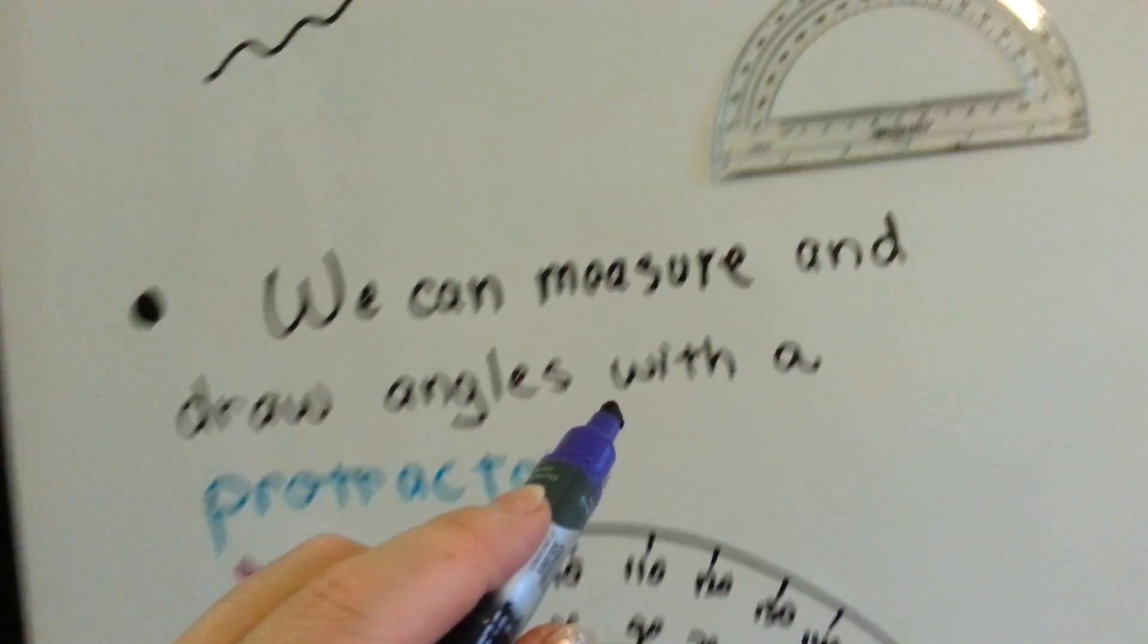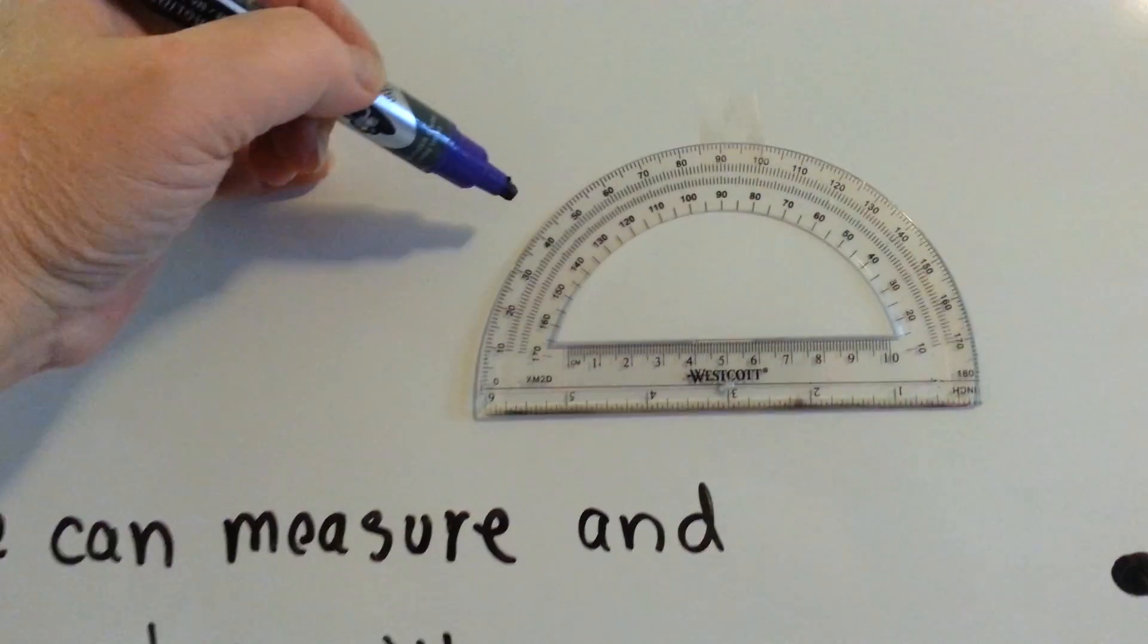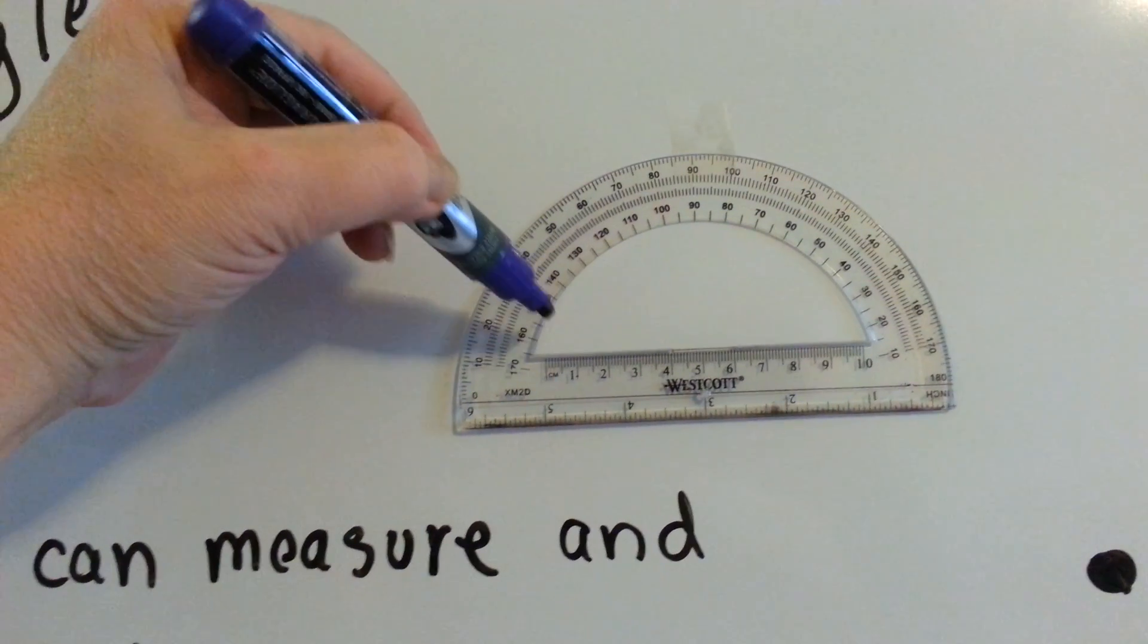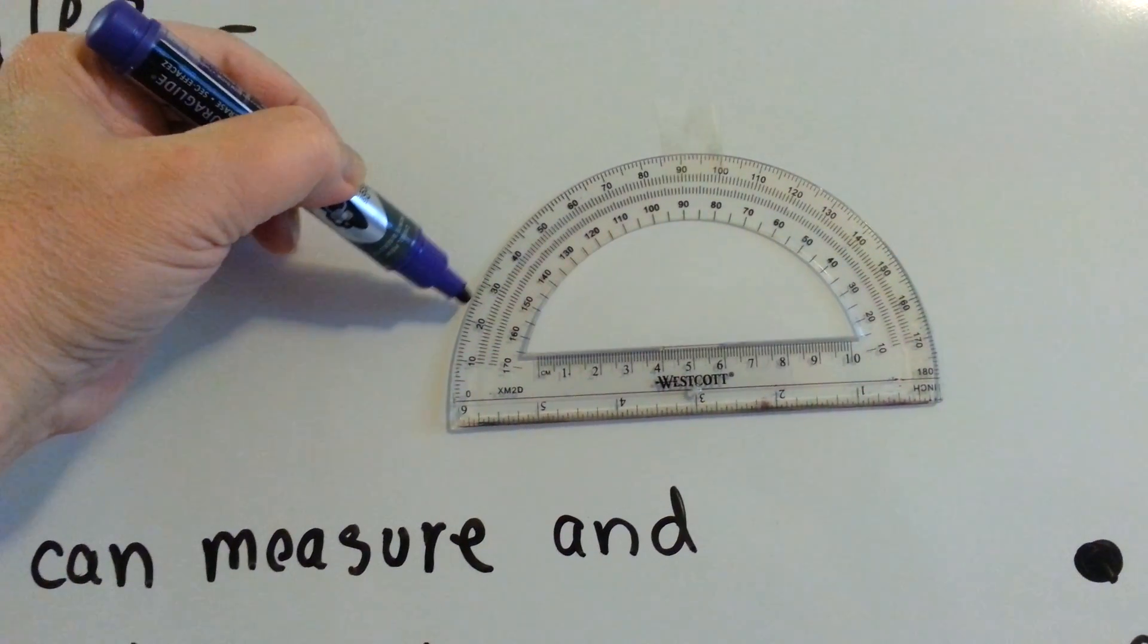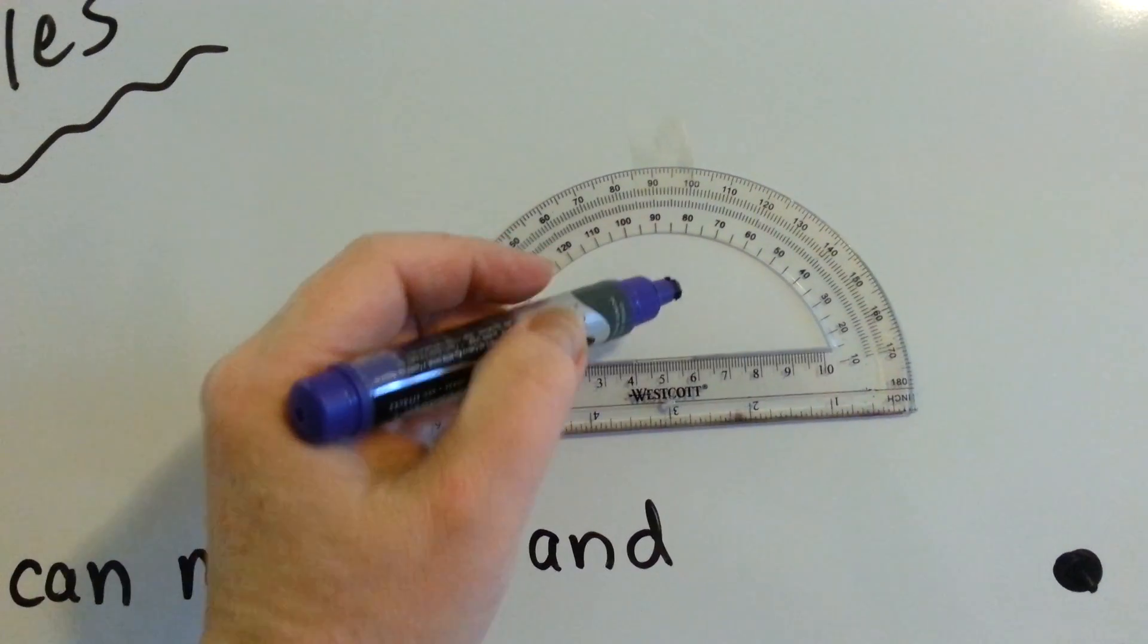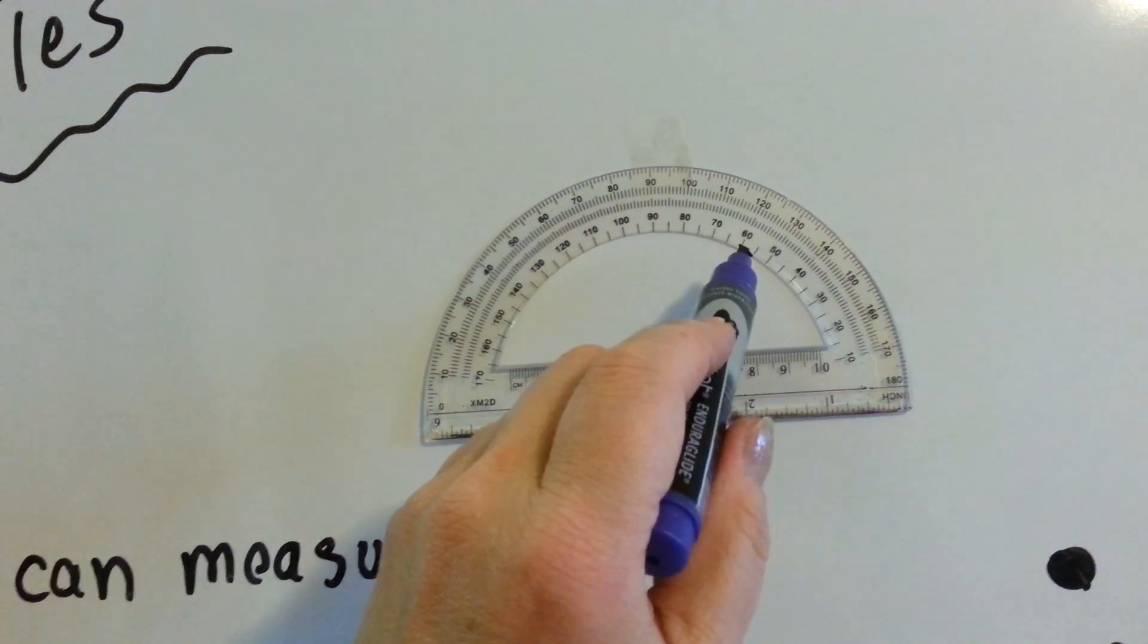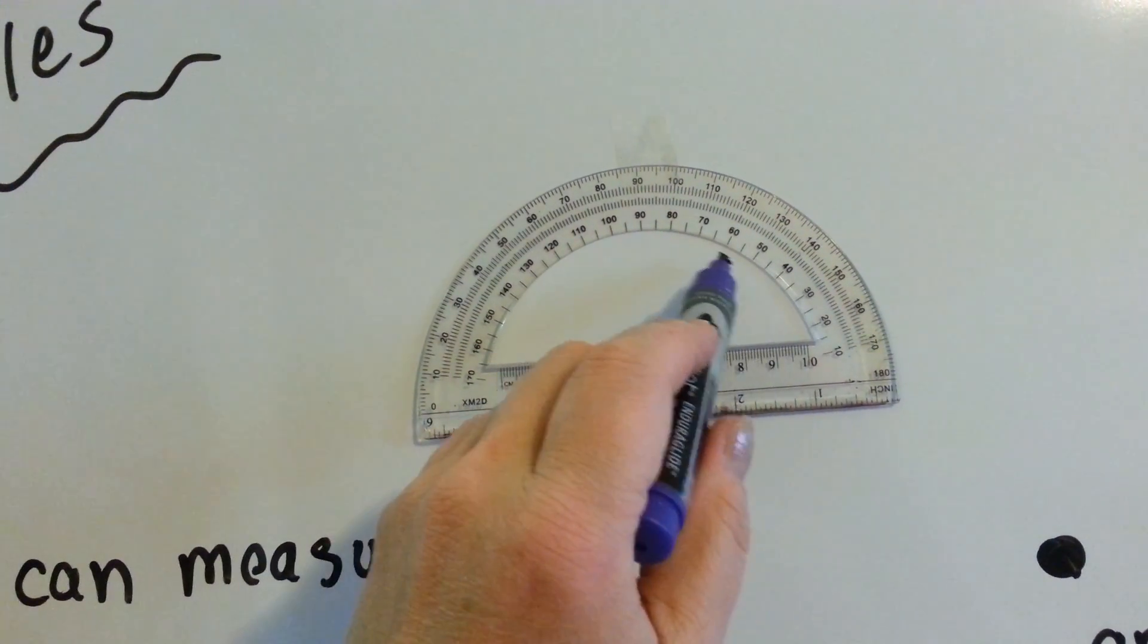Because there's two sets of numbers. If you look here, you'll see there's hundreds on this side, but then it goes 80, 70, 60, 50, 40. But on the inside over here, see how it goes 80, 70, 60, 40 on the inside here, but on the outside it goes 120, 130, 140.